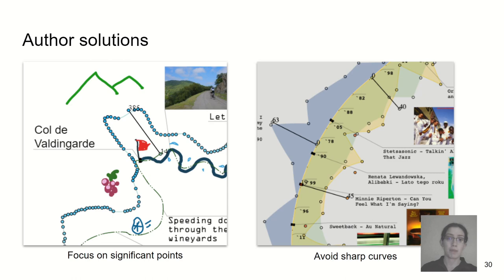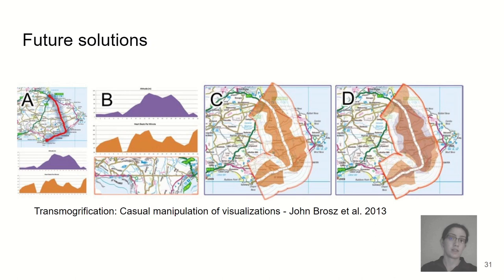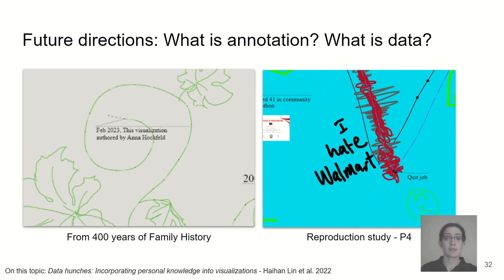Previous work has looked at how to overcome these challenges, such as the transmogrification technique by Brazeal, and it'd be interesting to see how such a technique could be incorporated into a tool like Timesplines. As a final note for future work, Timesplines takes the approach of blurring the boundaries between annotation and data.